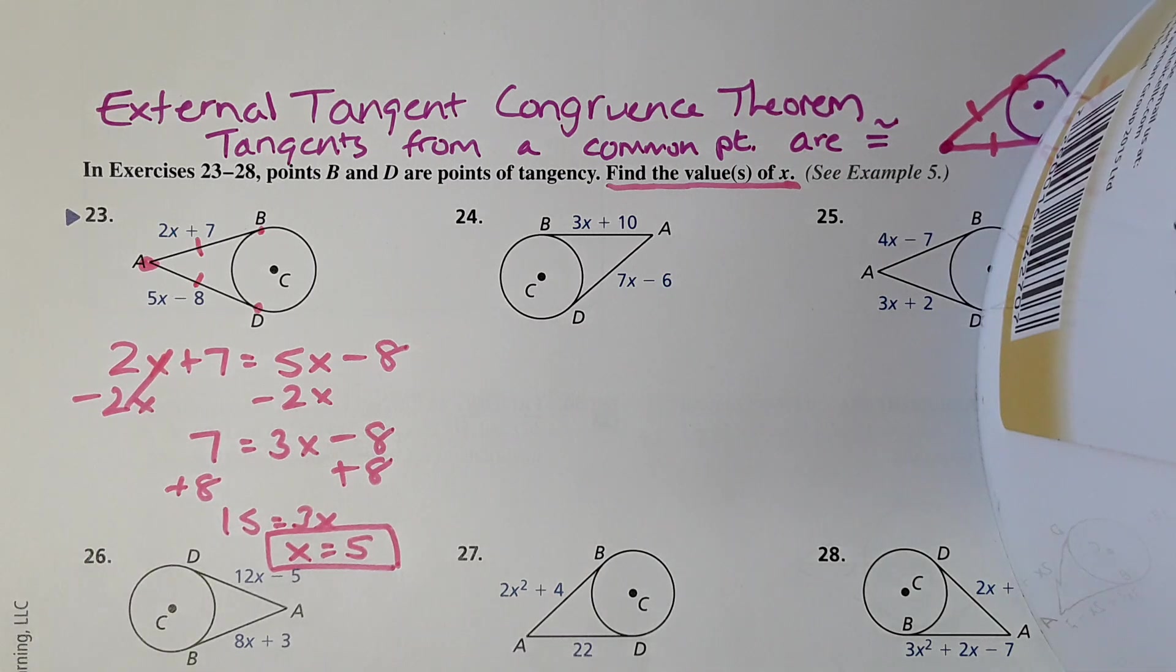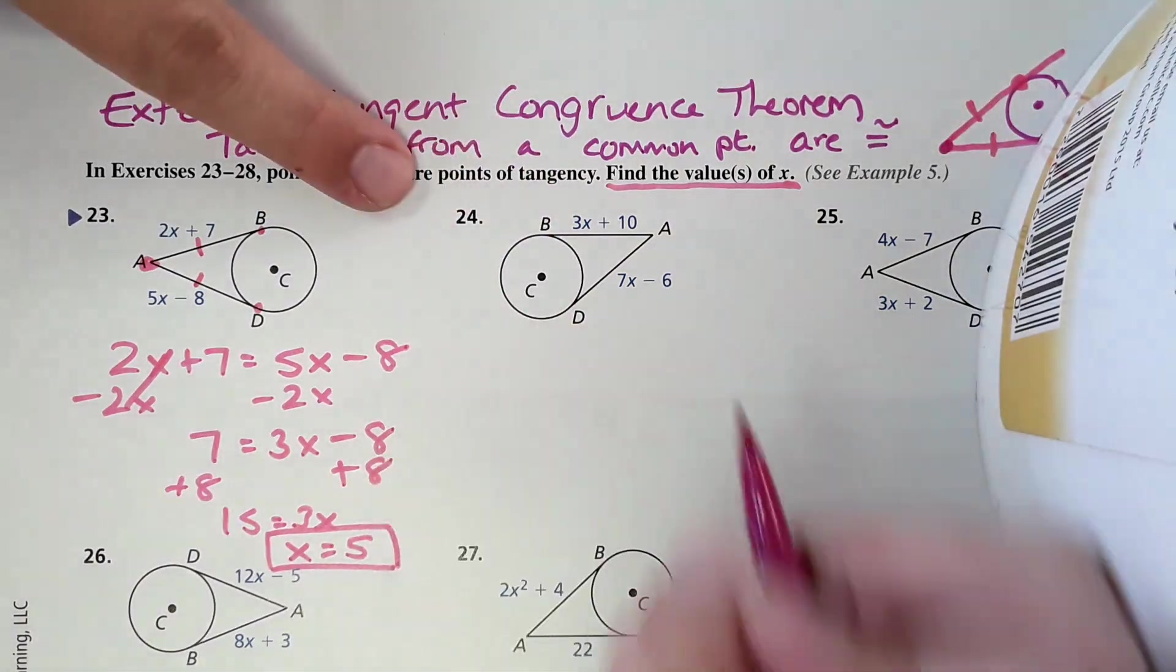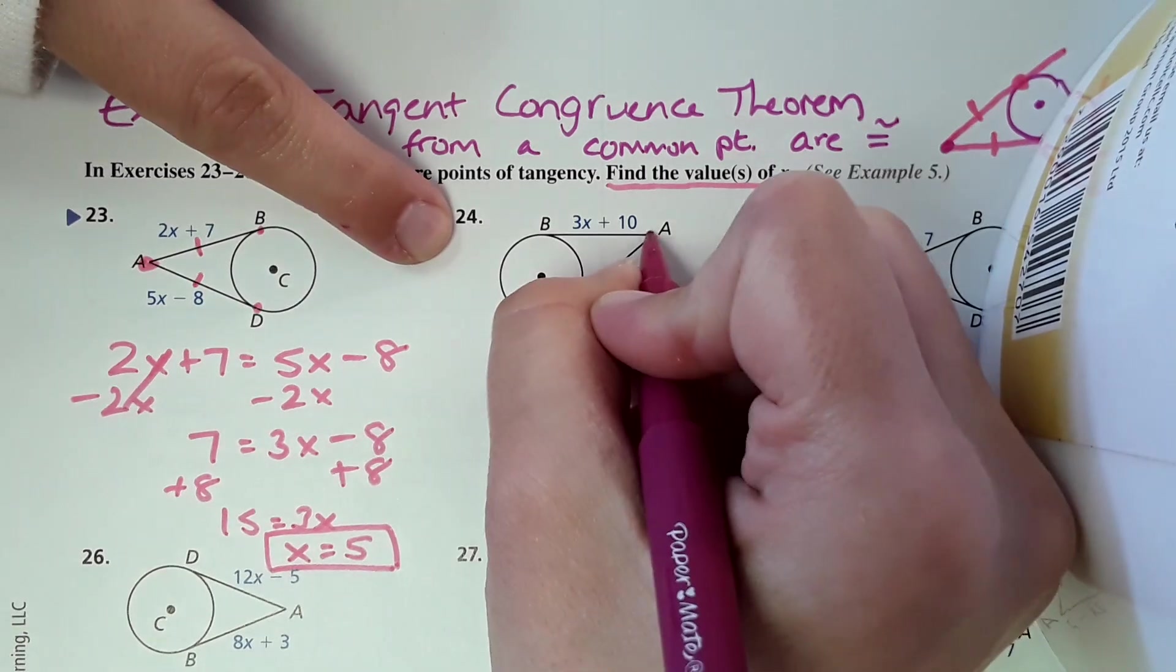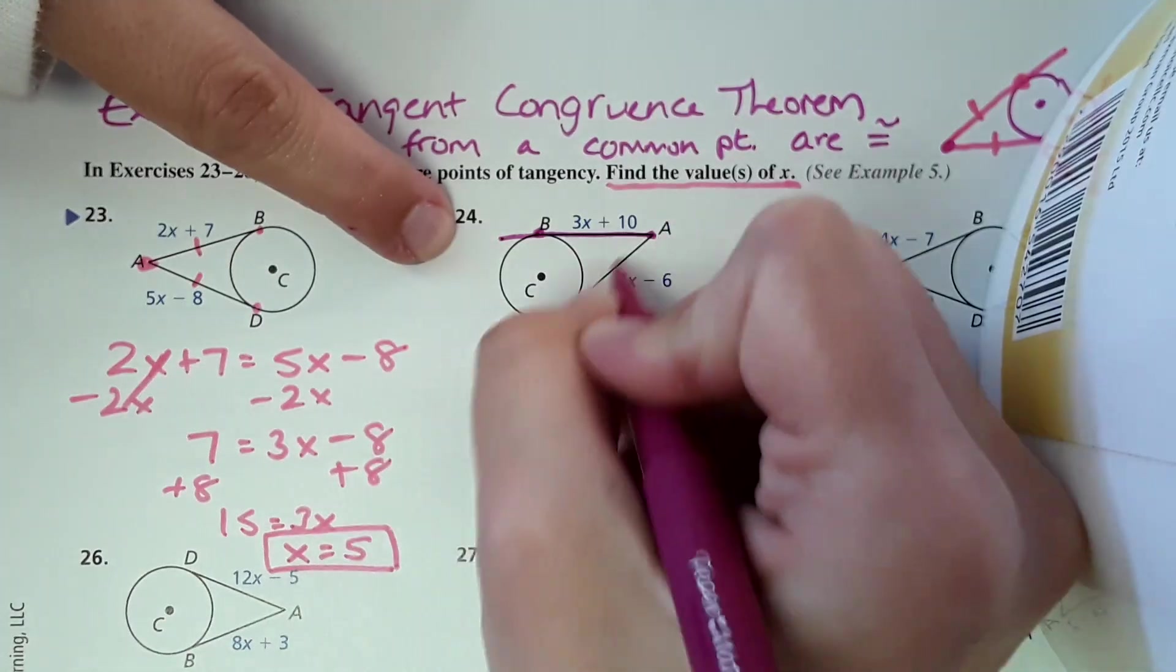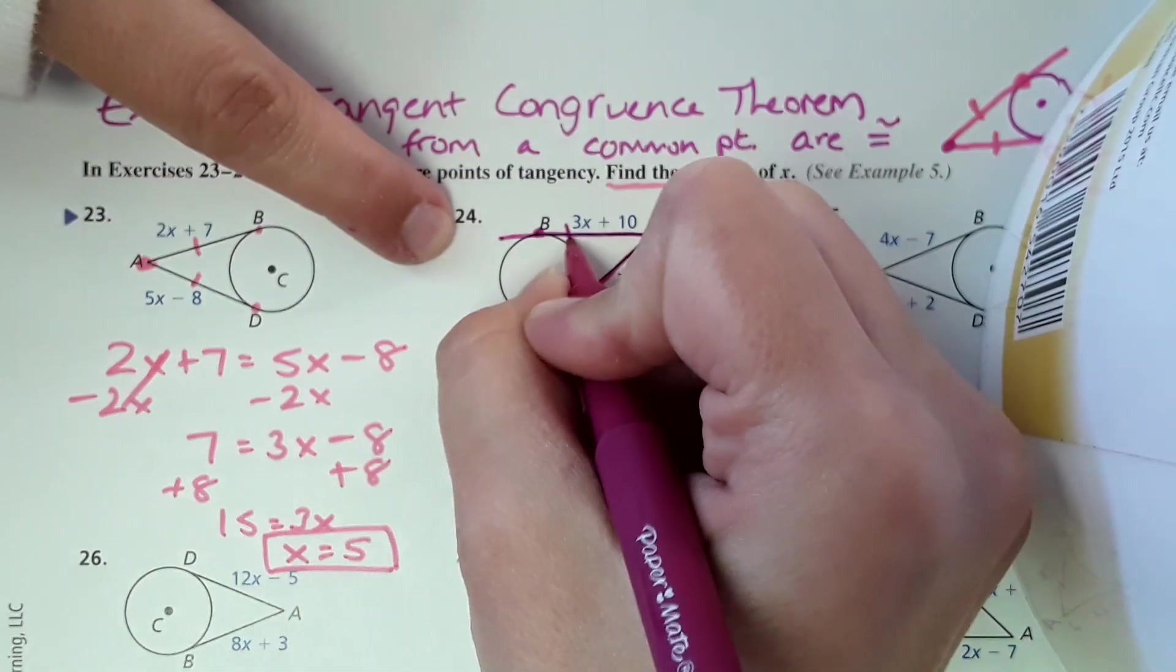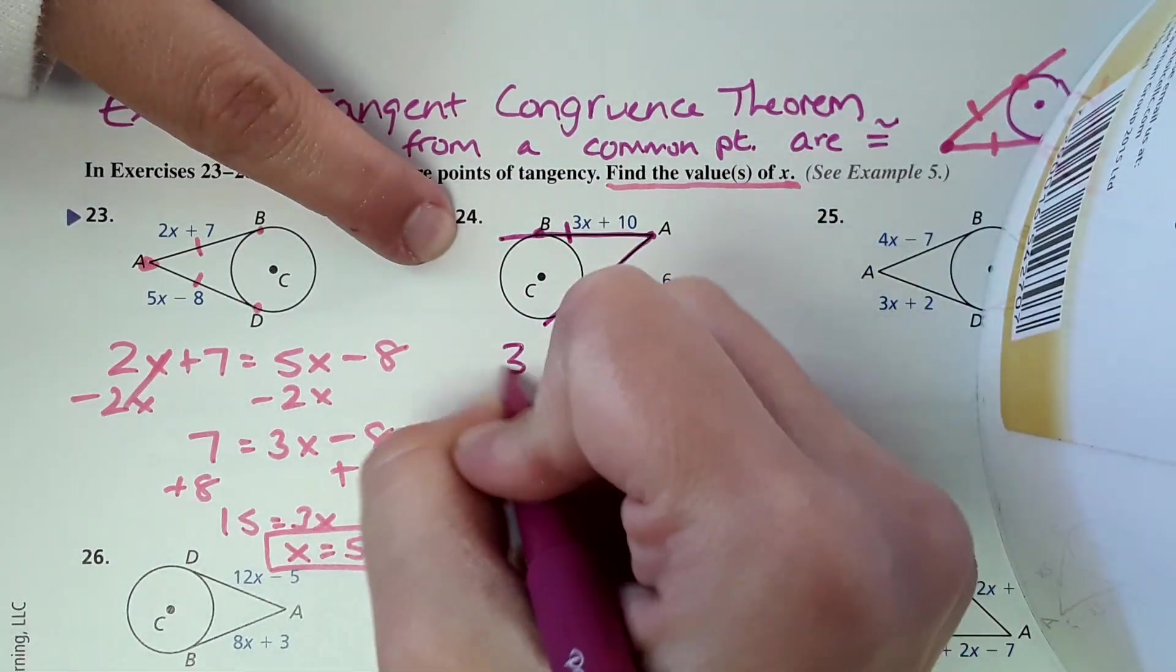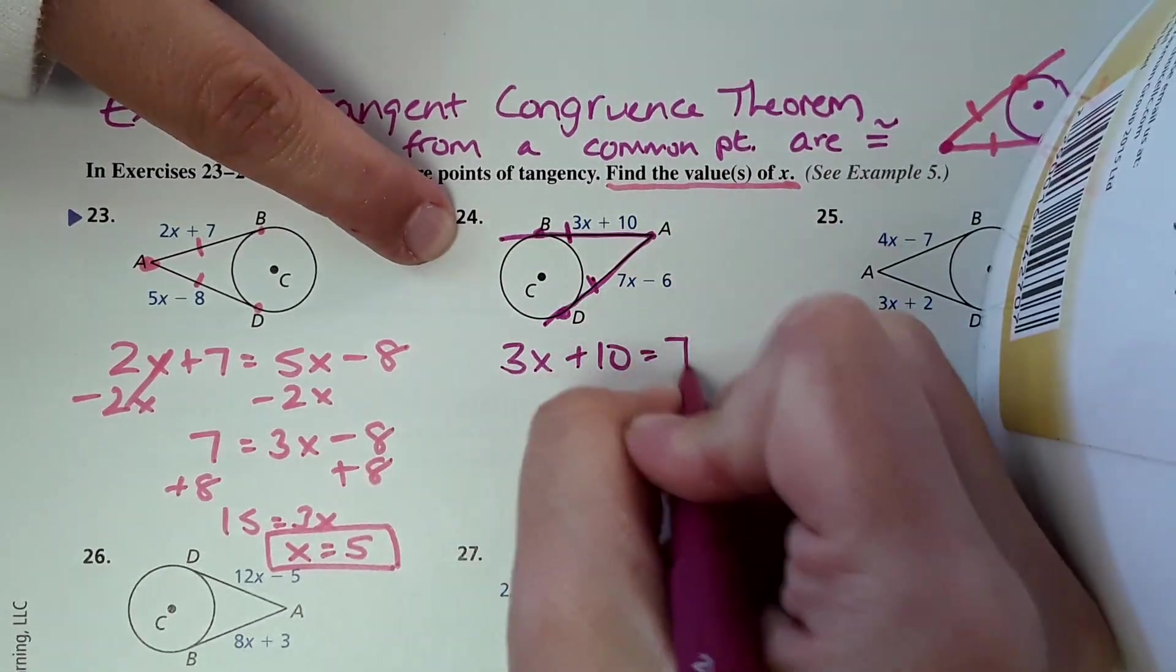We'll just do one more like this. We'll do number 24. Again, these tangent lines are from the same endpoint. We're told that they're tangent lines, so therefore this is equal to this. 3x plus 10 equals 7x minus 8.